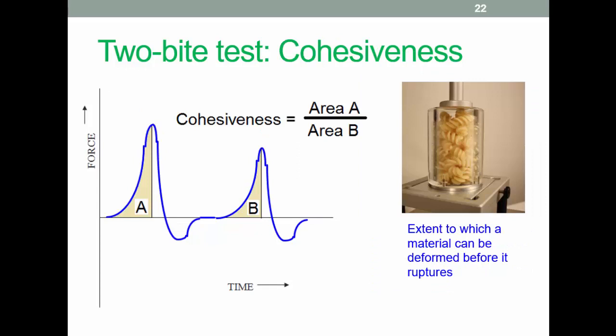So cohesiveness - the two-bite test still works on this. This is the extent to which a material can be deformed before it ruptures. So there's an example there of a spiral pasta. Again, the system performs this calculation based on working out the ratio of the two areas under the curve at the point where the pressure is applied.